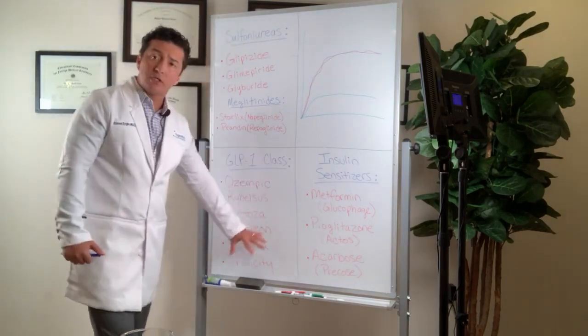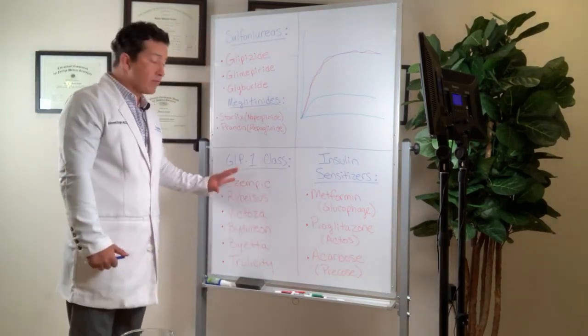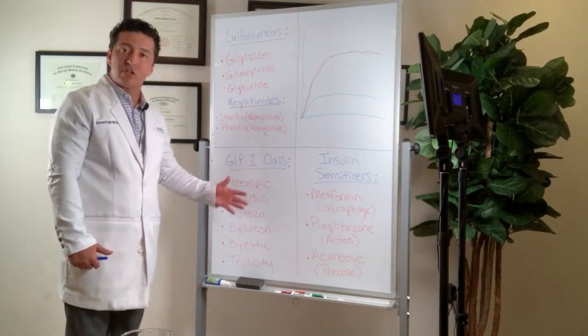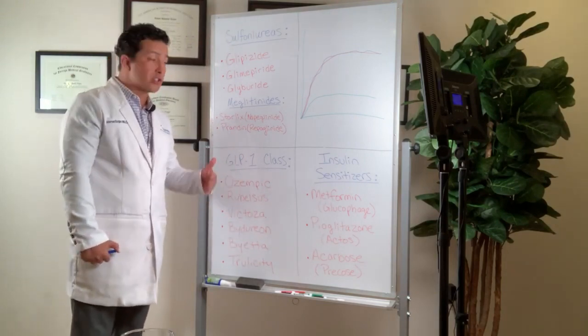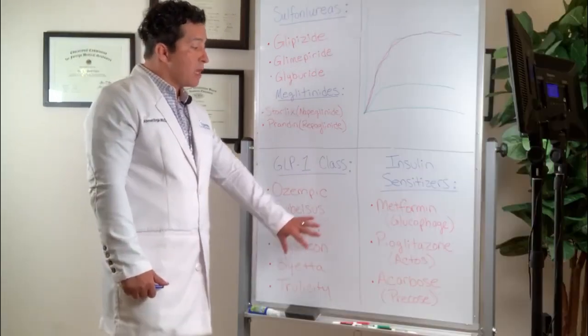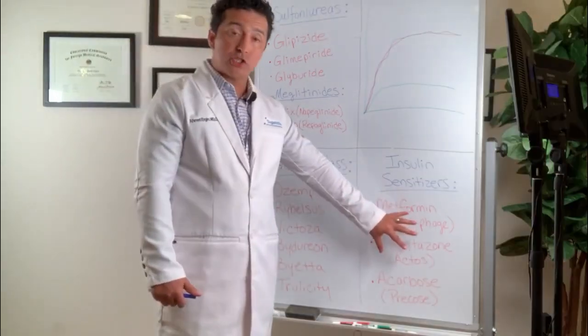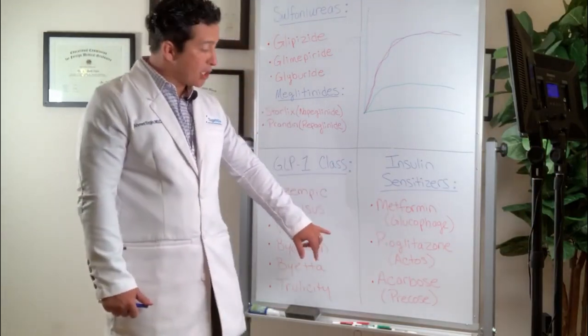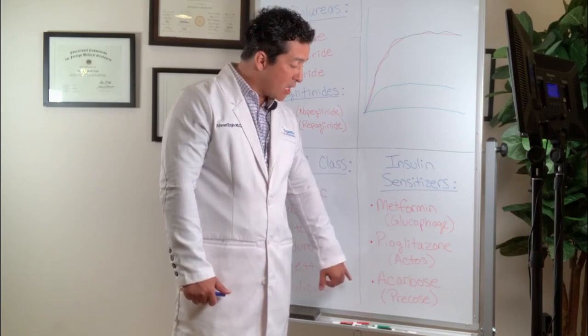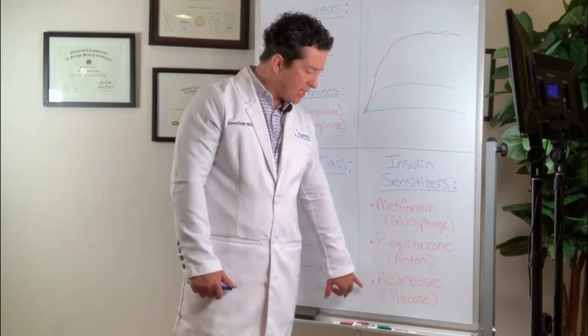Again, these are the only downside of the GLP-1 class. Unfortunately, they are expensive, but there are a lot of co-pays, coupons, etc., that your doctors, your pharmacists can help you to get very, very good deals. Insulin sensitizers, again, metformin is free at Publix. Pioglitazone is very inexpensive medication as well. Acarbose also is very inexpensive.